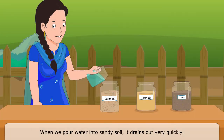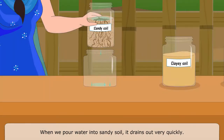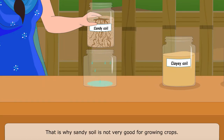These particles can hold a lot of air but not water and nutrients. When we pour water into sandy soil, it drains out very quickly. That is why sandy soil is not very good for growing crops.